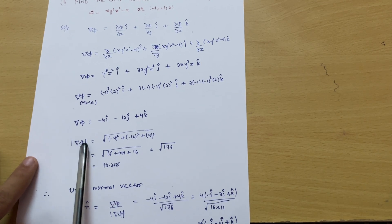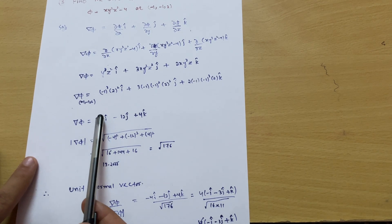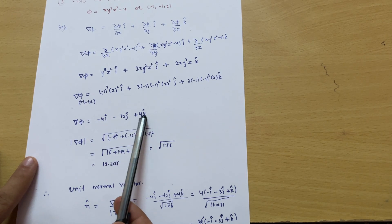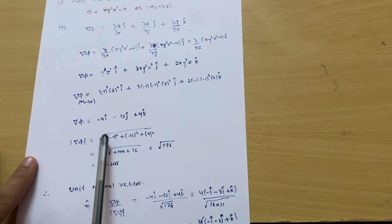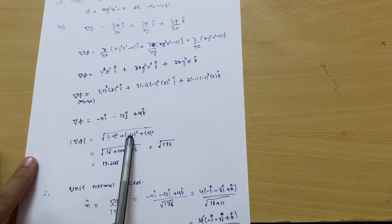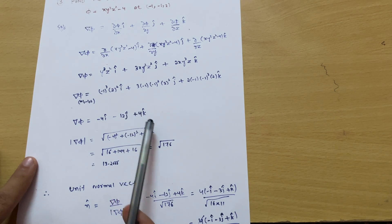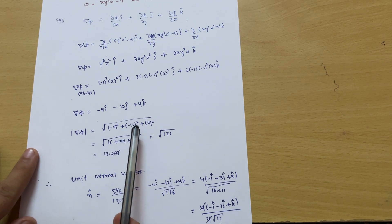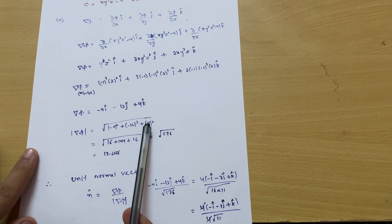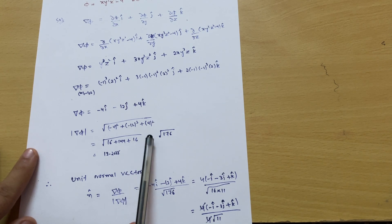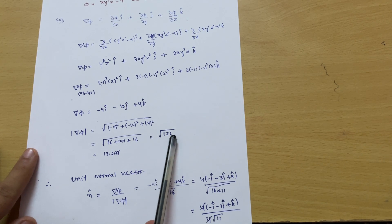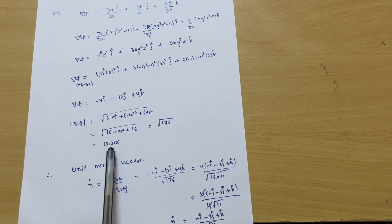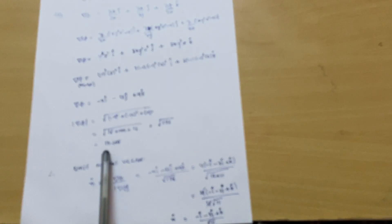Now we calculate mod of del phi, which equals the square root of the sum of squares of the coefficients: √((−4)² + (−12)² + (4)²) = √(16 + 144 + 16) = √176, or approximately 13.2665.